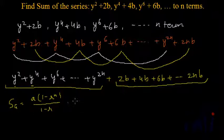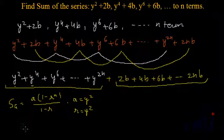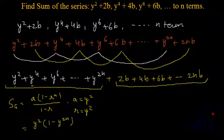Here the value of a equals y squared and the value of r is also y squared. Substituting these values of a and r into the formula, we get the sum as y squared multiplied by 1 minus y squared to the power n, which is y to the power 2n, divided by 1 minus y squared.